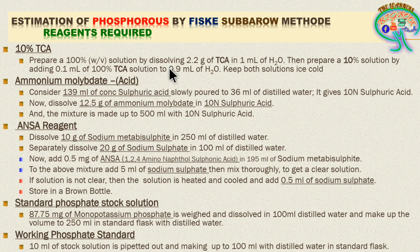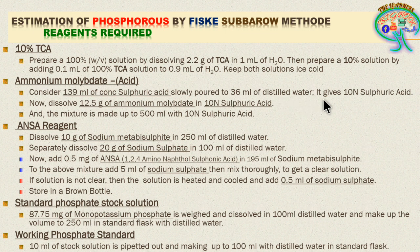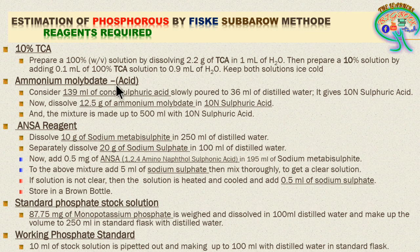To prepare acidic ammonium molybdate, slowly pour 139 ml of concentrated sulfuric acid into 36 ml of distilled water to give 10 normal sulfuric acid. Then dissolve 12.5 grams of ammonium molybdate in 10 normal sulfuric acid and make the mixture up to 500 ml with 10 normal sulfuric acid.